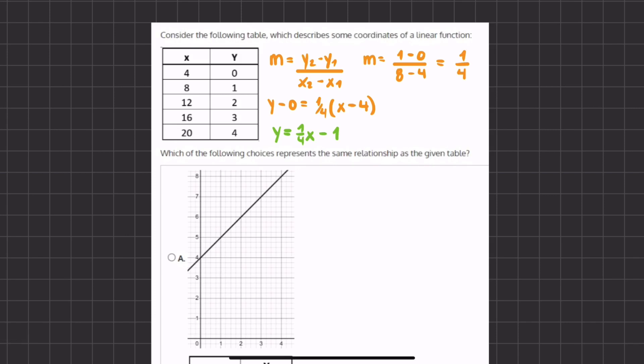Alright, so in this problem we want to find which of the following choices represents the same relationship as the given table.